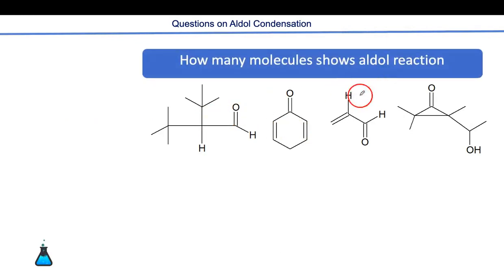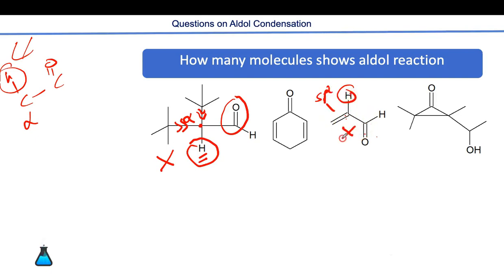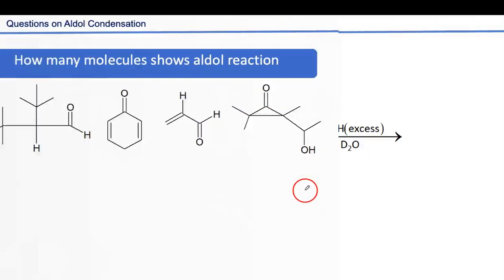The second question: how many of these molecules undergo aldol condensation? Any carbonyl compound with an alpha-carbon hydrogen undergoes aldol condensation. The first example is an exceptional case — it has alpha-hydrogen but the +I effect makes it very difficult to remove, so it does not undergo aldol condensation. Another compound has alpha-hydrogen but it is sp2-hybridized, so the conjugate base cannot undergo resonance — it also does not undergo aldol condensation. One compound undergoes retro-aldol. Another compound with sp2 alpha-carbon has more acidic hydrogen because the negative charge is resonance-stabilized, so it can generate a nucleophile and undergo aldol condensation.